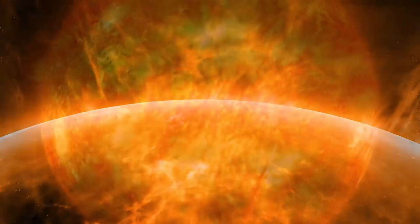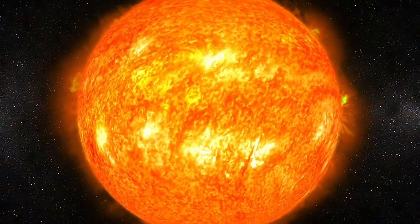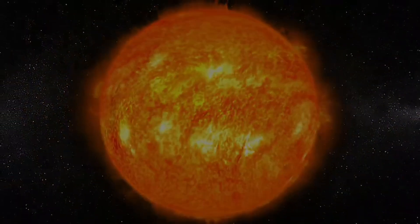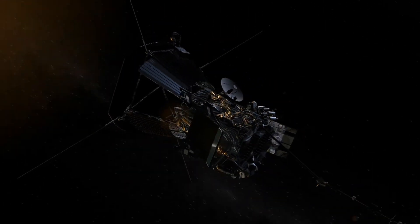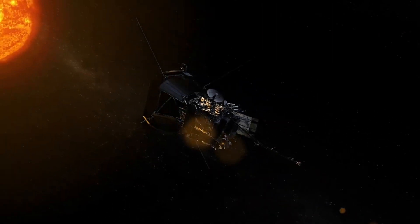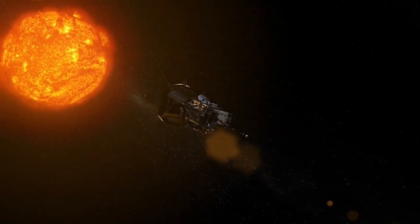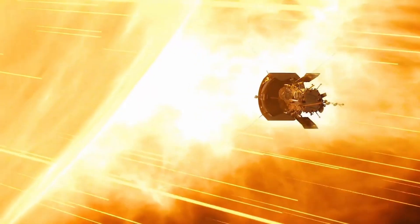The photosphere is the visible surface of the Sun and the lowest layer of the atmosphere. Above the photosphere are the chromosphere and corona, which also emit visible light but can only be seen during solar eclipses, when the Moon passes between Earth and the Sun.